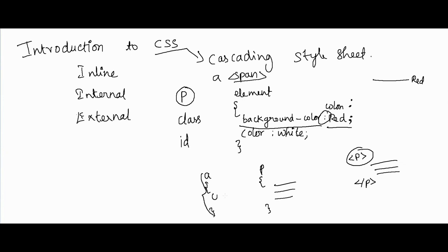Property name and value are separated by a colon, and at the end of each line there should be a semicolon. If you are using only one line of style — for example, color: white — the semicolon at the end is optional; it won't cause any errors. However, if you have multiple lines, you need to give a semicolon to differentiate one style from another. The colon is mandatory whether you are using inline, internal, or external CSS — it is part of the syntax.